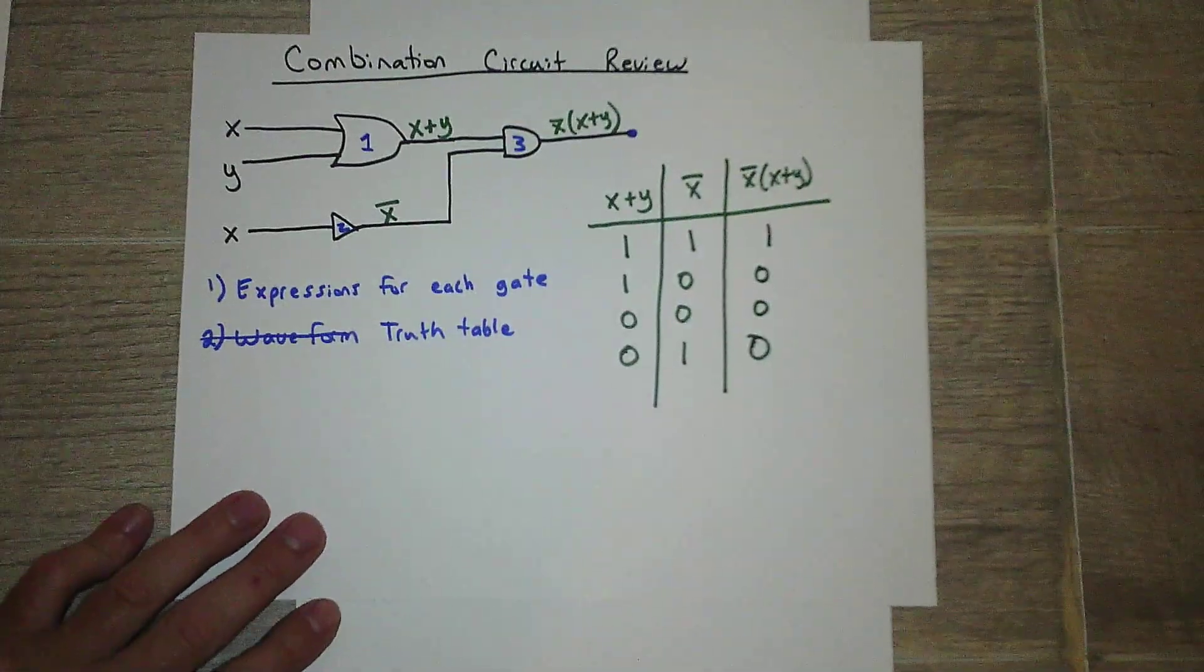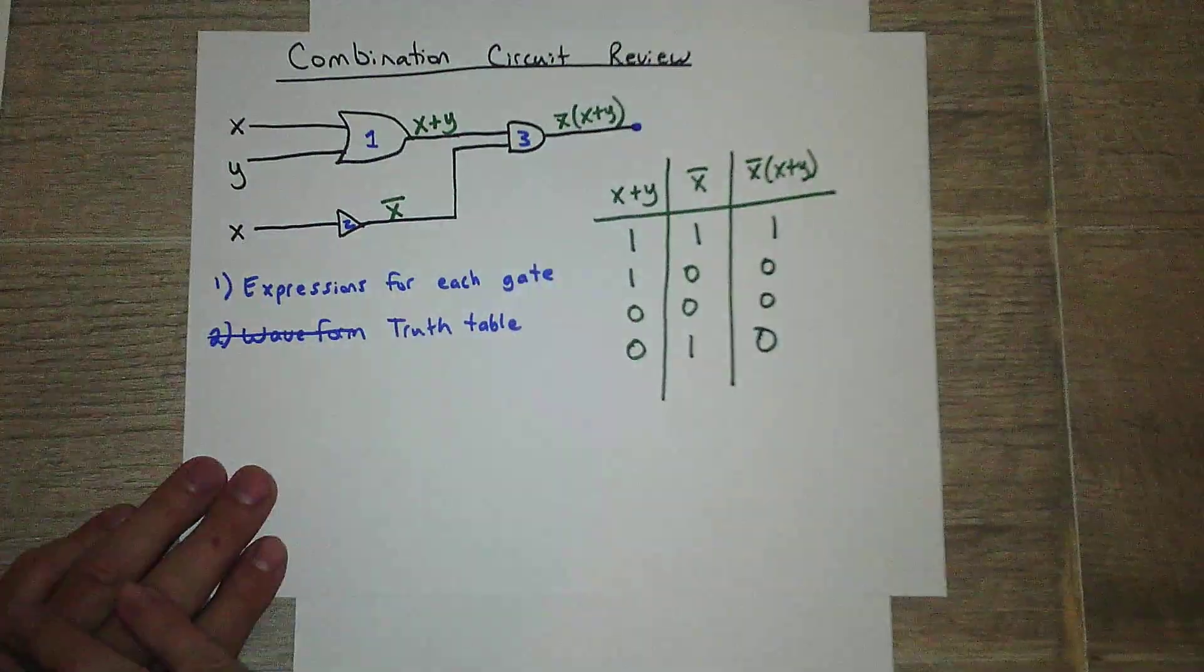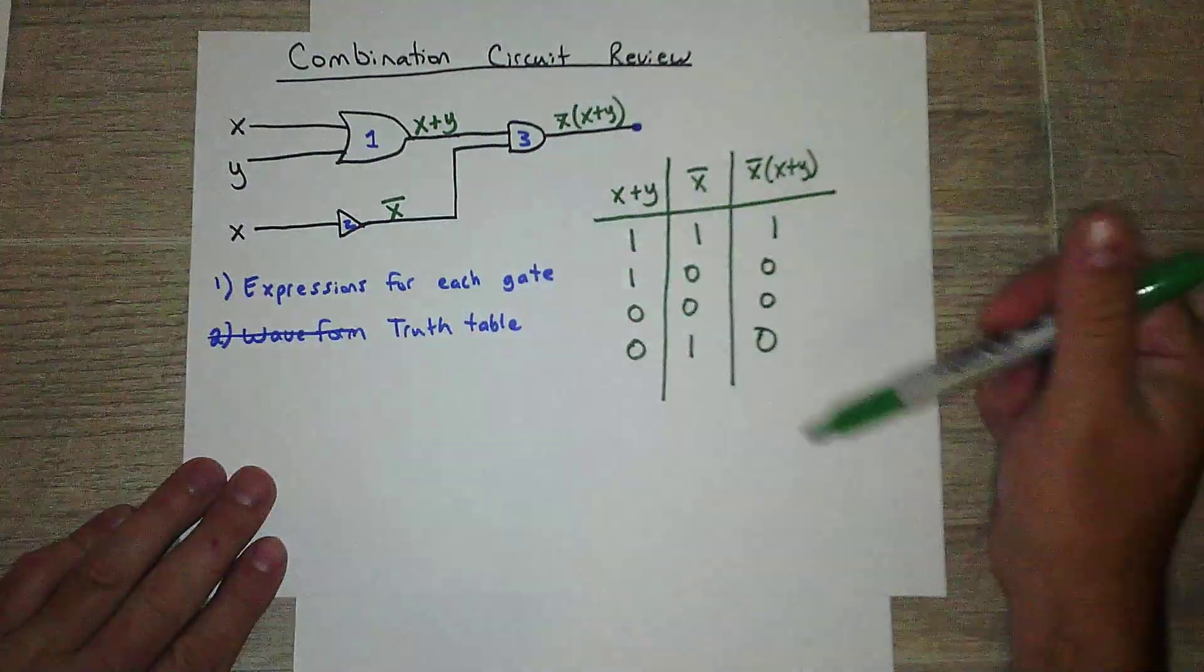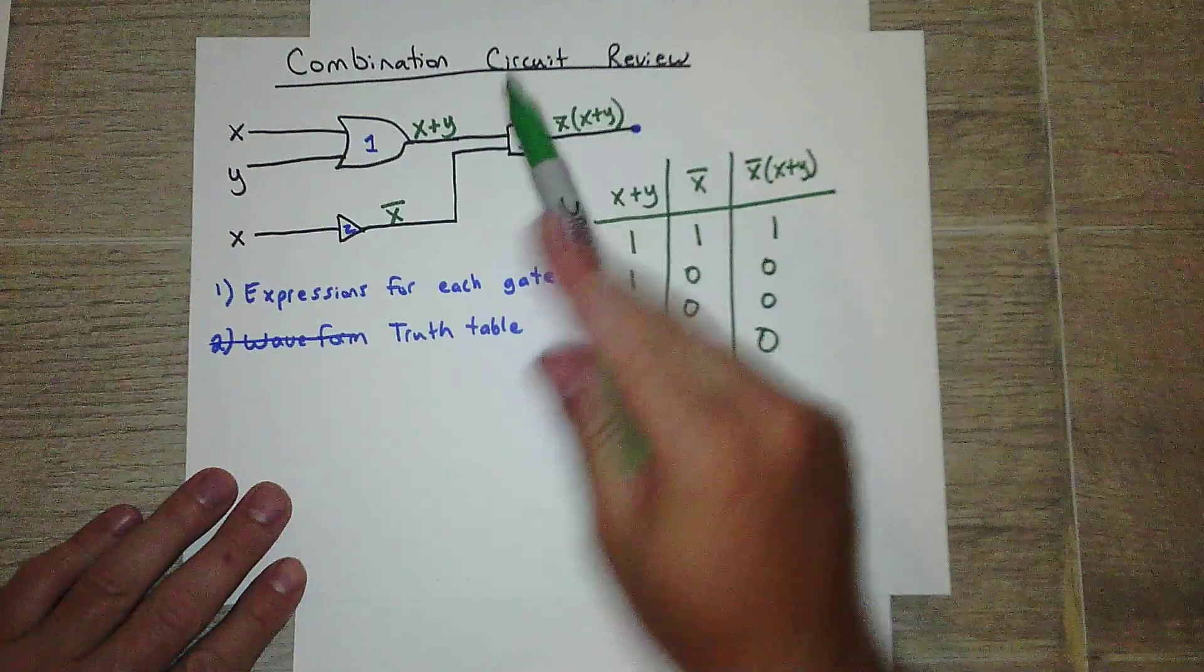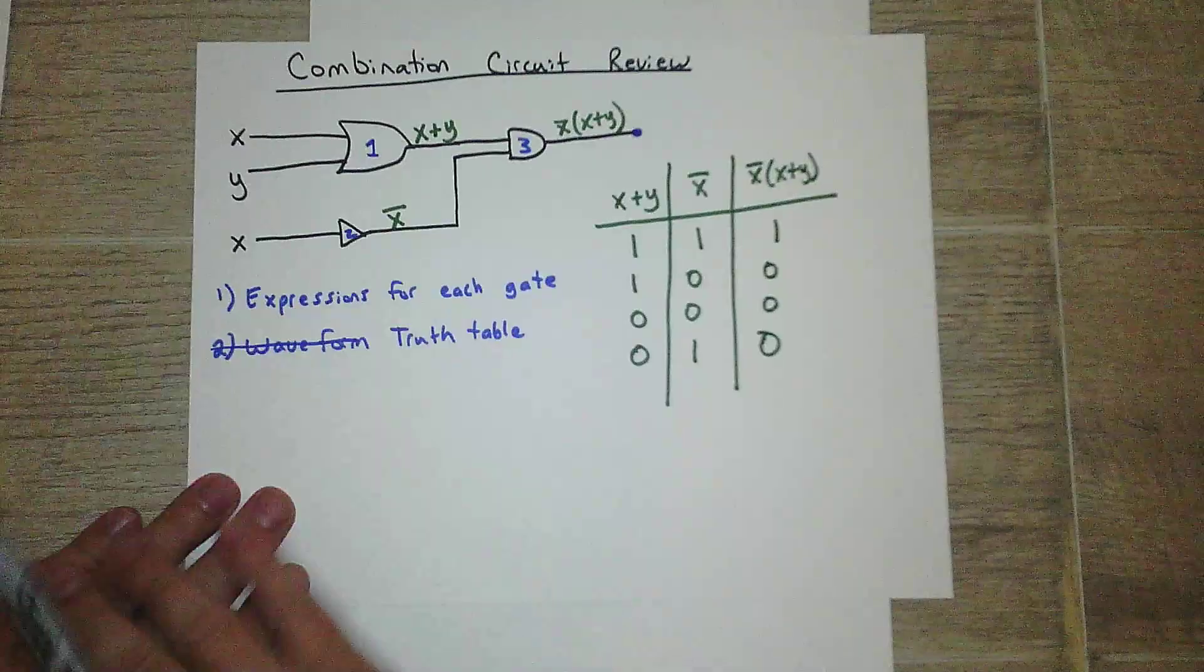So it means all of these is off. Okay. So hopefully not as hard as it may have seemed at first. Just make sure you practice the expressions. And your truth tables are always based off of the last gate. Unless otherwise asked.